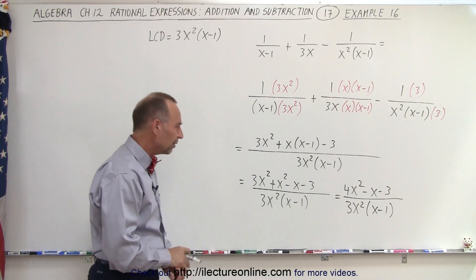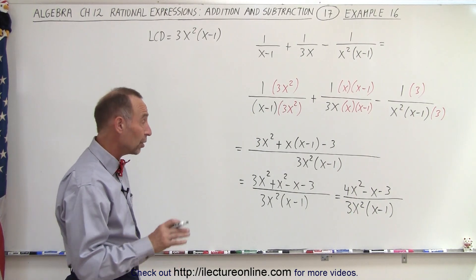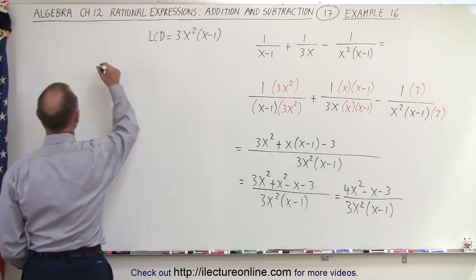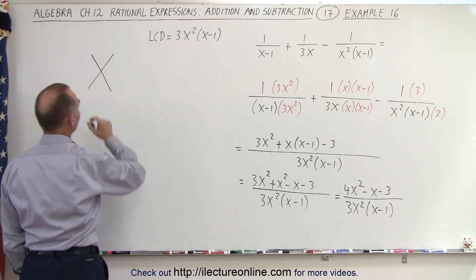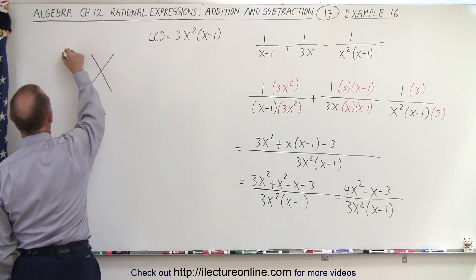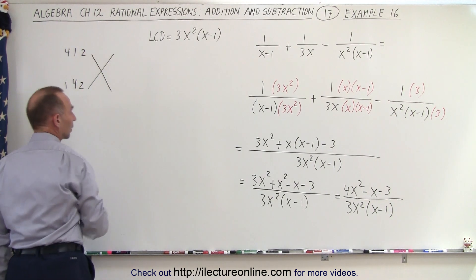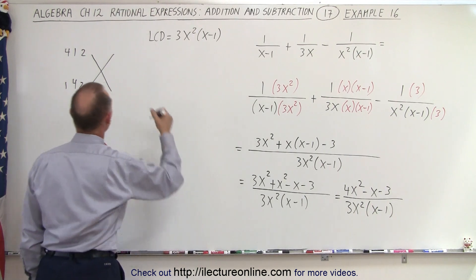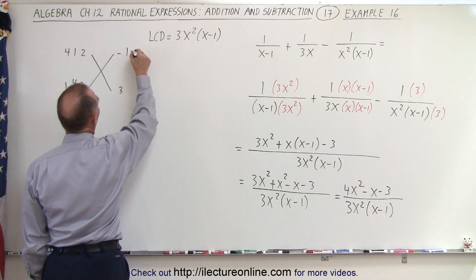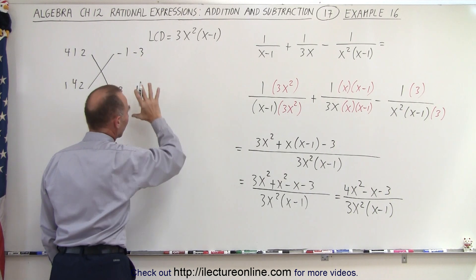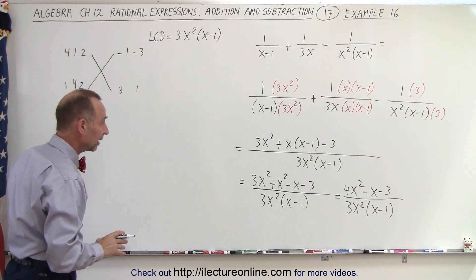Now, is that numerator factorable? Well, to check it out, we can use the FOIL method. In the front, we have a 4 and a 1, a 1 and a 4, a 2 and a 2 — those are all the combinations. In the back, a negative 3, a minus 1 and 3, or a minus 3 and 1. We don't have to have all the combinations there because we already took care of it in the front.